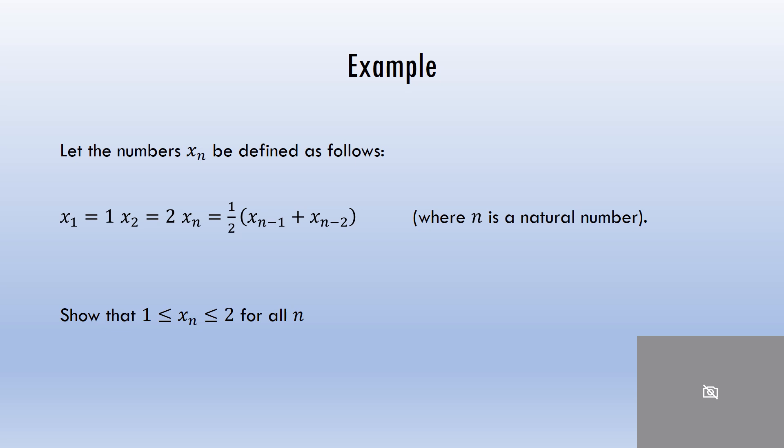Anytime you're given a problem of something to prove, you always want to look at it and ask yourself if it makes sense in the first place. Would it make sense that all these numbers would be between 1 and 2? Let's just look at the first few numbers in this sequence and see if we can list them out. If you want, pause the video and see if you can use the definition to get the first five or six terms.